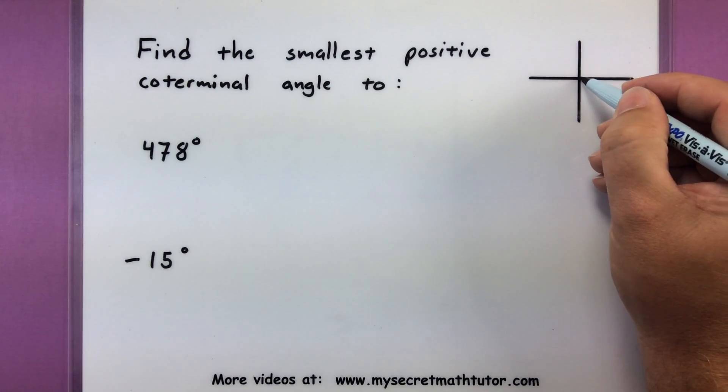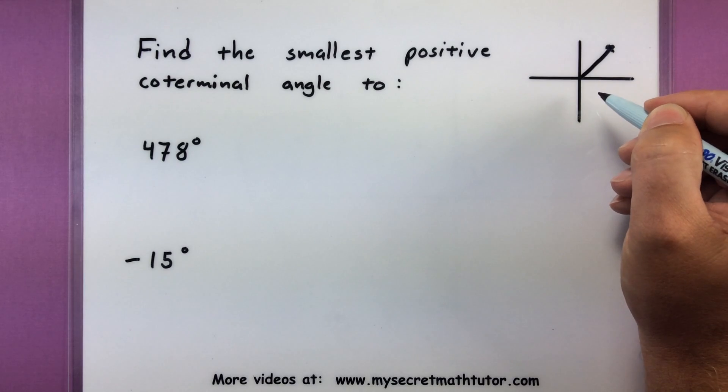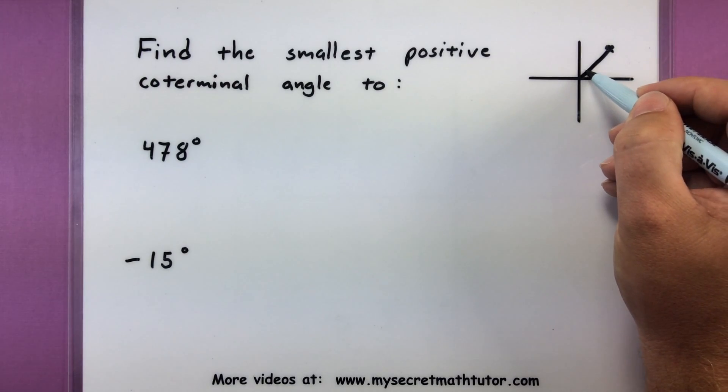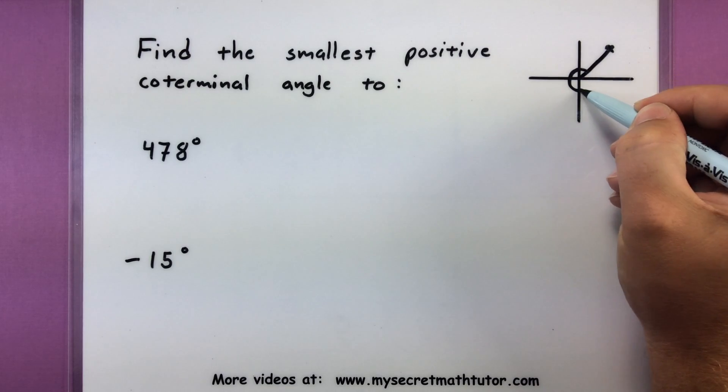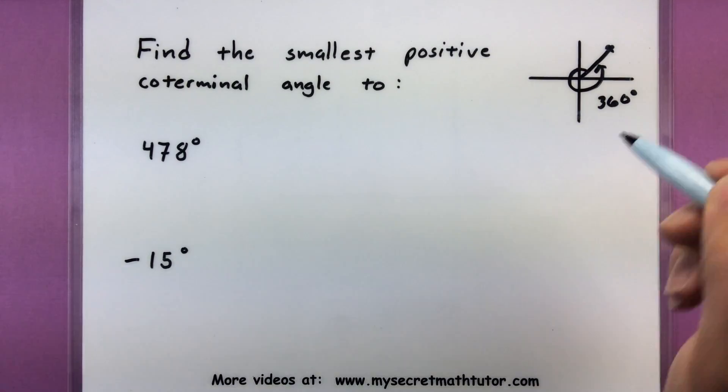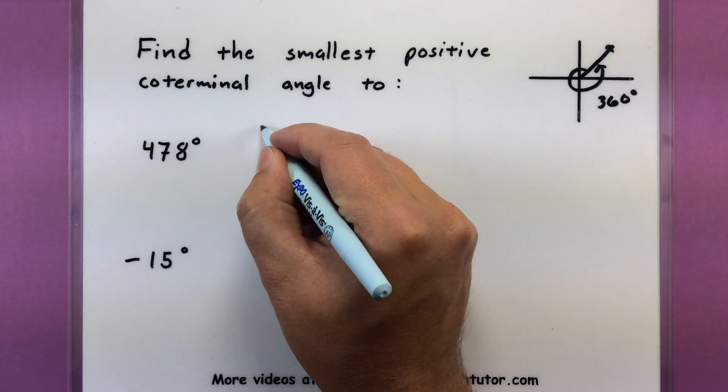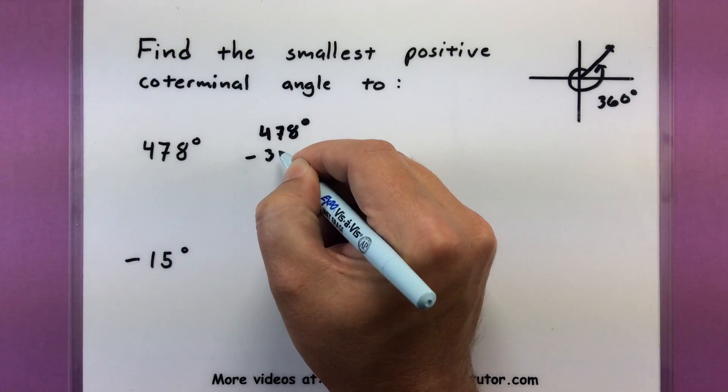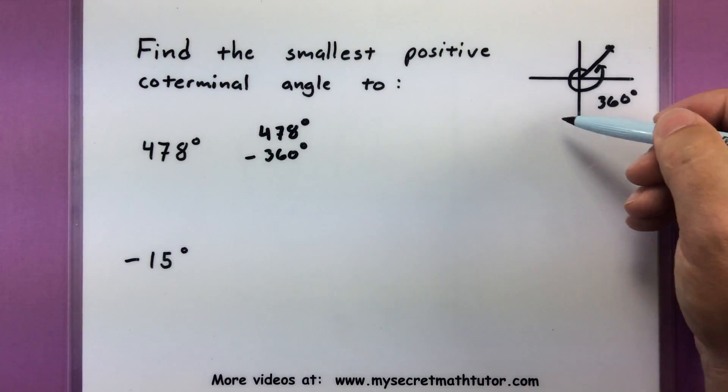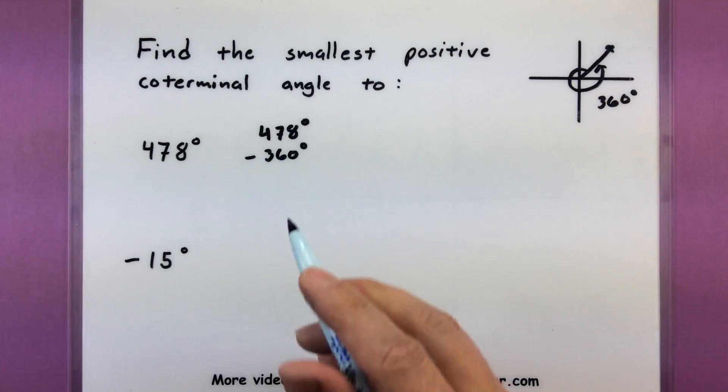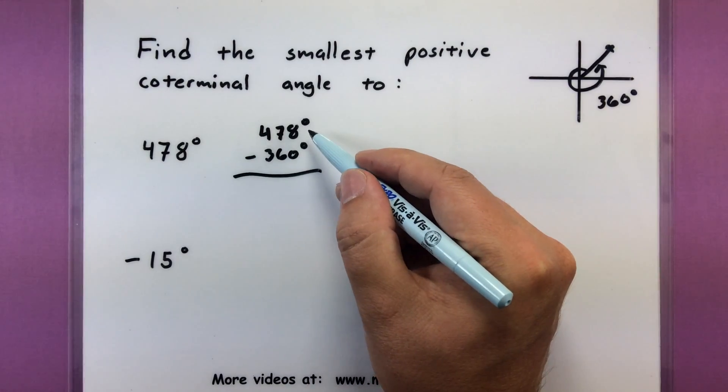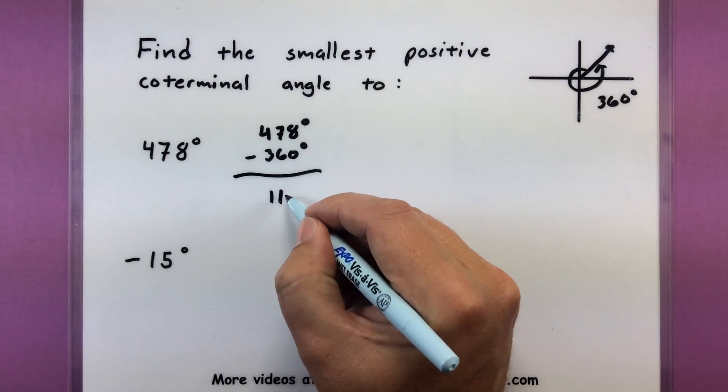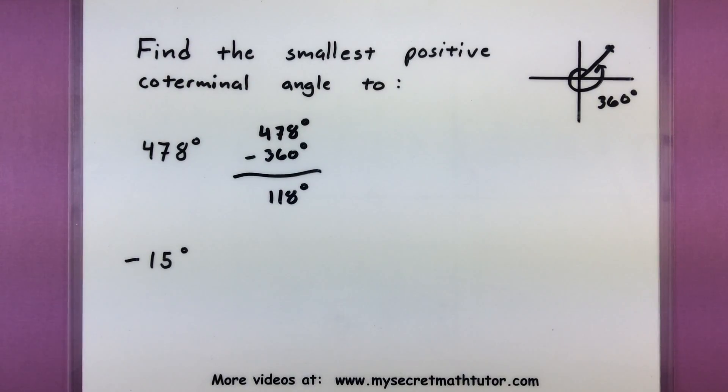Remember that all we need to do is think about our angle wherever it is in the coordinate axes and either add or subtract 360. So this first one, the instructions say find the smallest positive coterminal angle to 478 degrees. Since I'm looking for something smaller or the smallest positive one, I'm going to start off by actually subtracting 360 degrees. If I take my angle and subtract 360 degrees, I'll get 118 degrees, which is pretty good.